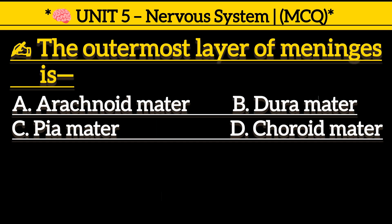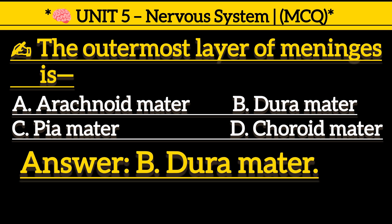The outermost layer of the meninges is: Option A, arachnoid matter. Option B, dura mater. Option C, pia mater. Option D, arachnoid matter. Correct answer is Option B, dura mater.